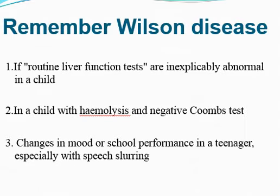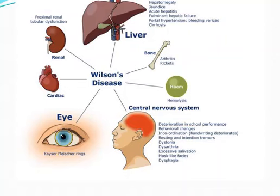Key takeaways for Wilson's disease: if routine liver function tests are abnormal in a child, consider Wilson's disease. If the child has hemolysis but it is Coombs-negative, suspect Wilson's disease. Changes in mood or school performance in teenagers with slurring of speech — rule out Wilson's disease. Wilson's disease deposits copper in the liver, bones, kidneys, heart, eye, and brain, and also involves the hematological system. Thank you. Jazakallah.